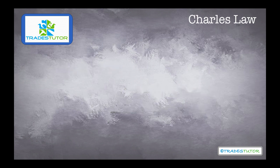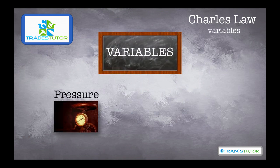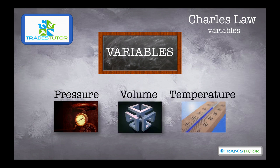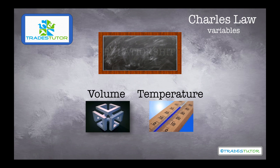So where do we start? We start with the variables. There are three to choose from: pressure, volume, and temperature. They all relate to the gas laws, which is what Charles Law is. In this case, we're only dealing with volume and temperature. The pressure remains constant throughout this process. What's the relationship then between the volume and the temperature when dealing with the gas law?